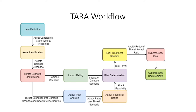Within the item, we need to identify the assets. Assets are the cyber security critical aspects. Based on the cyber security properties and asset candidates, we will identify the assets and get the damage scenarios. Through threat scenario identification we will identify the damage scenario and find out the impact rating — how severe the particular damage scenario can cause to the asset. Impact rating will be an input for risk determination.